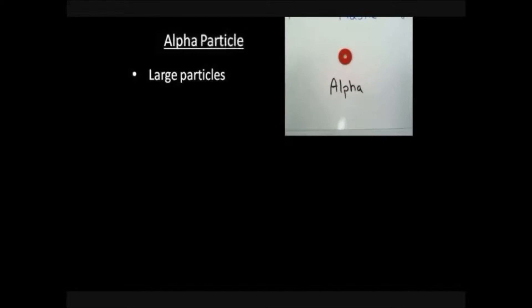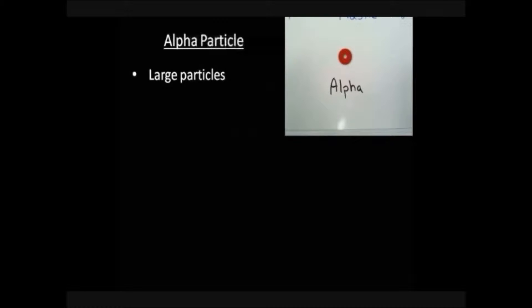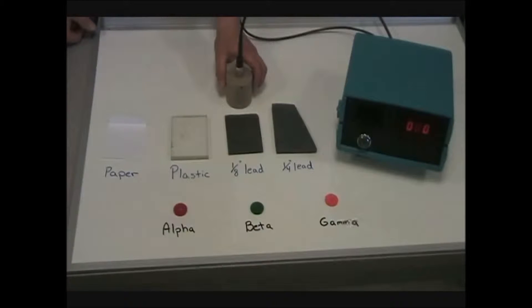Alpha particles are very large in terms of atomic particles, and as such can't penetrate very deeply through materials. They can be stopped with a piece of paper, the outer dead skin layer of the human body, or a few inches of air.